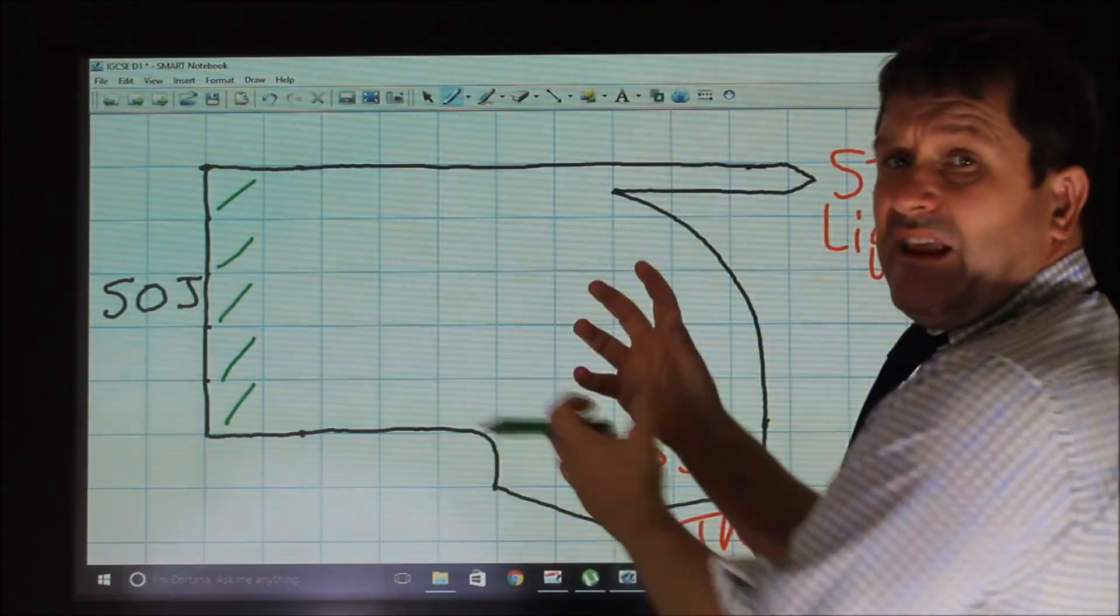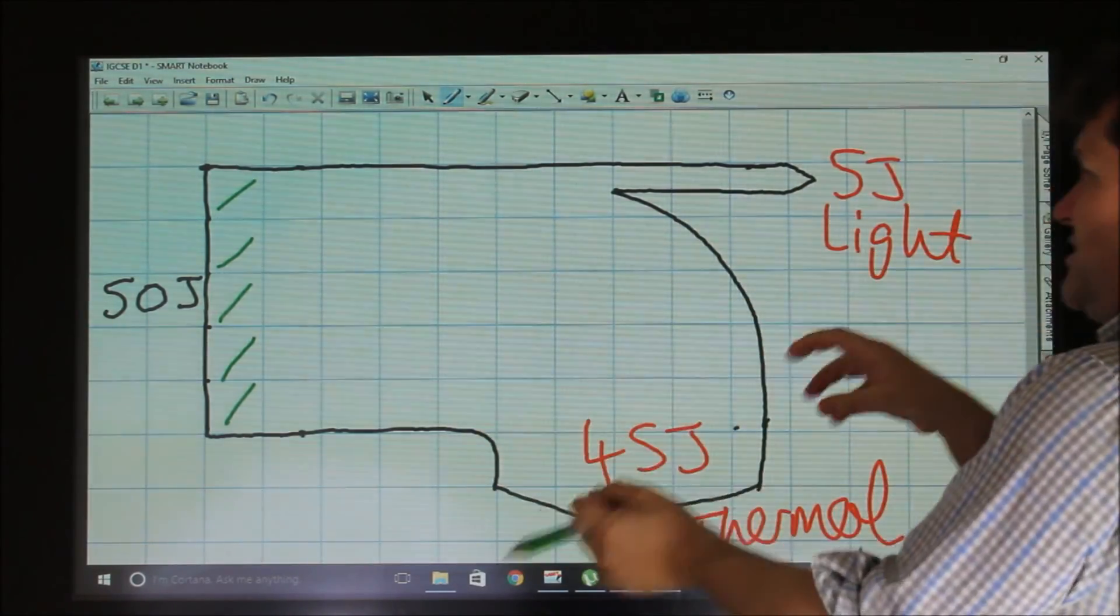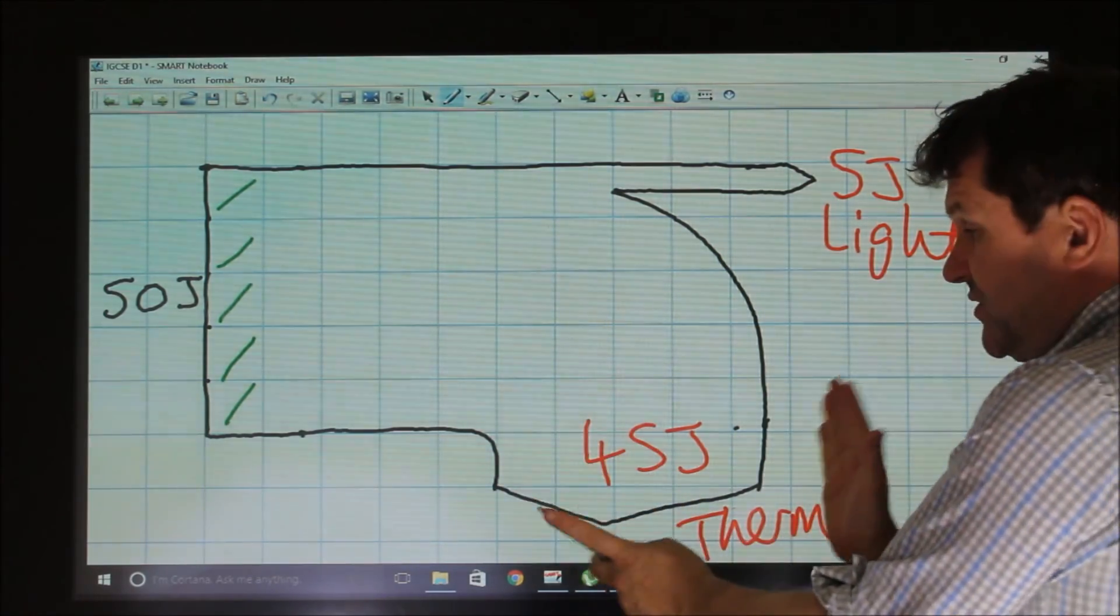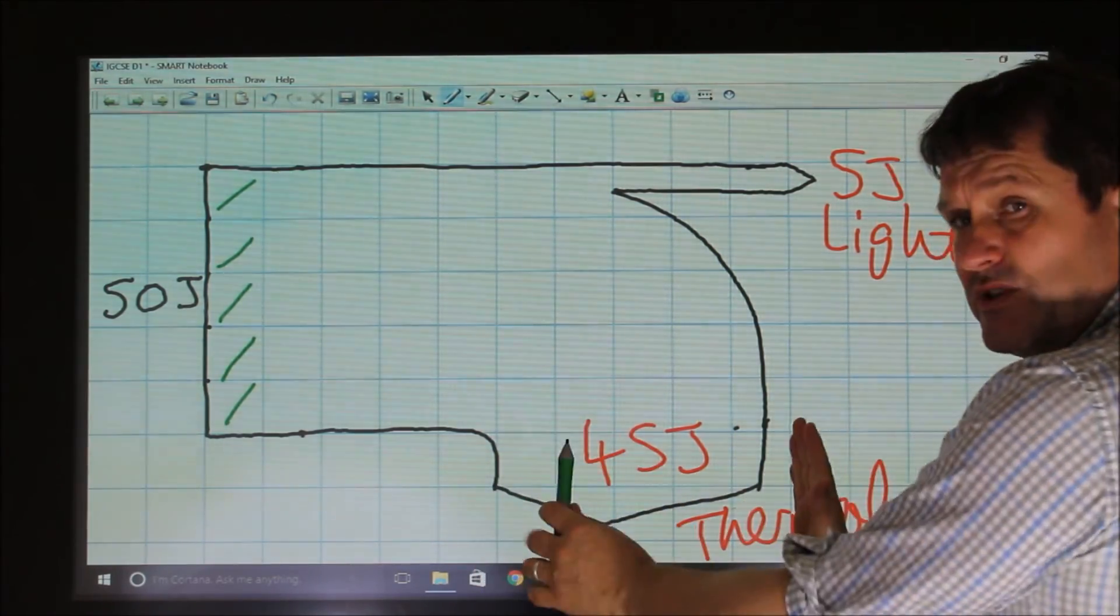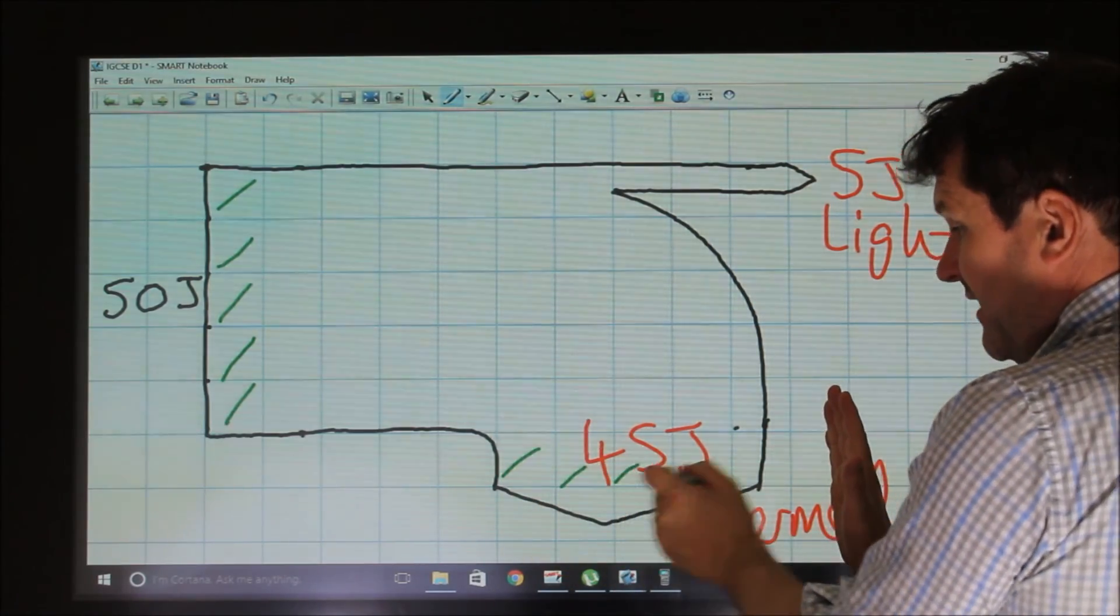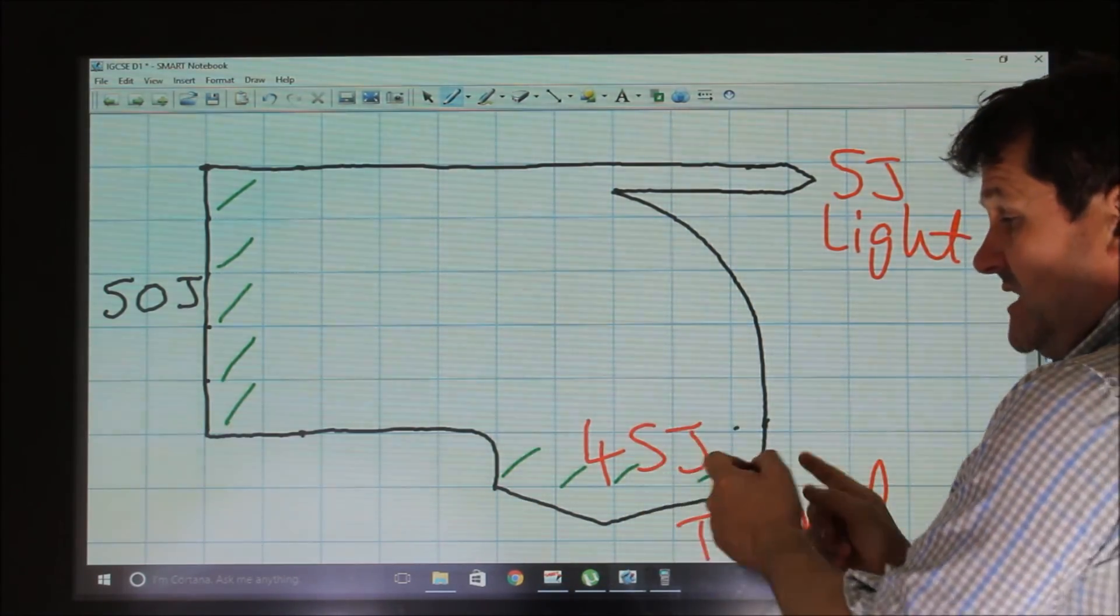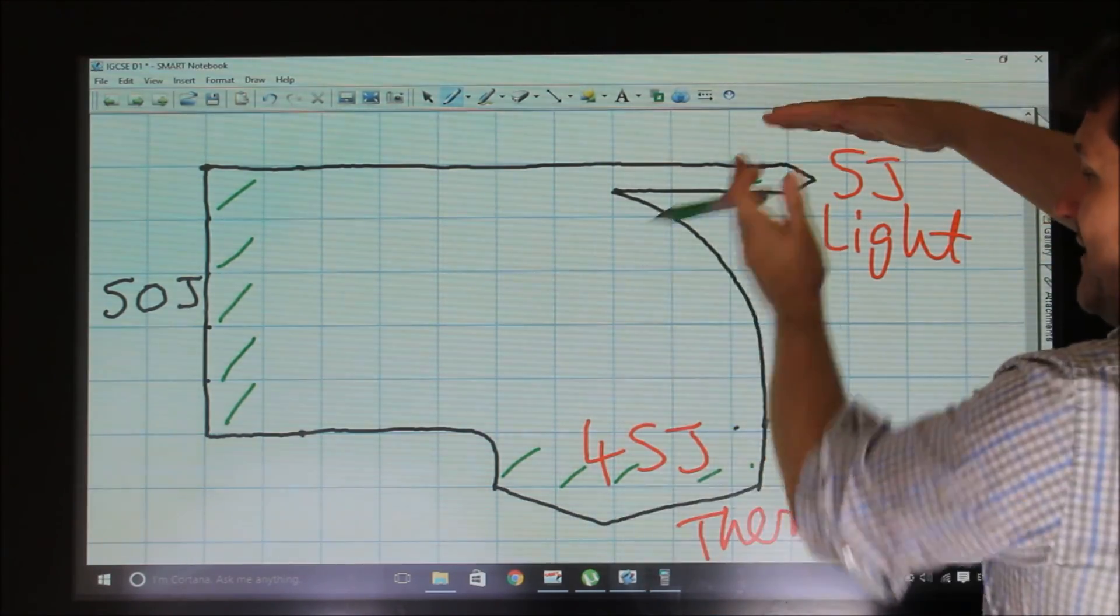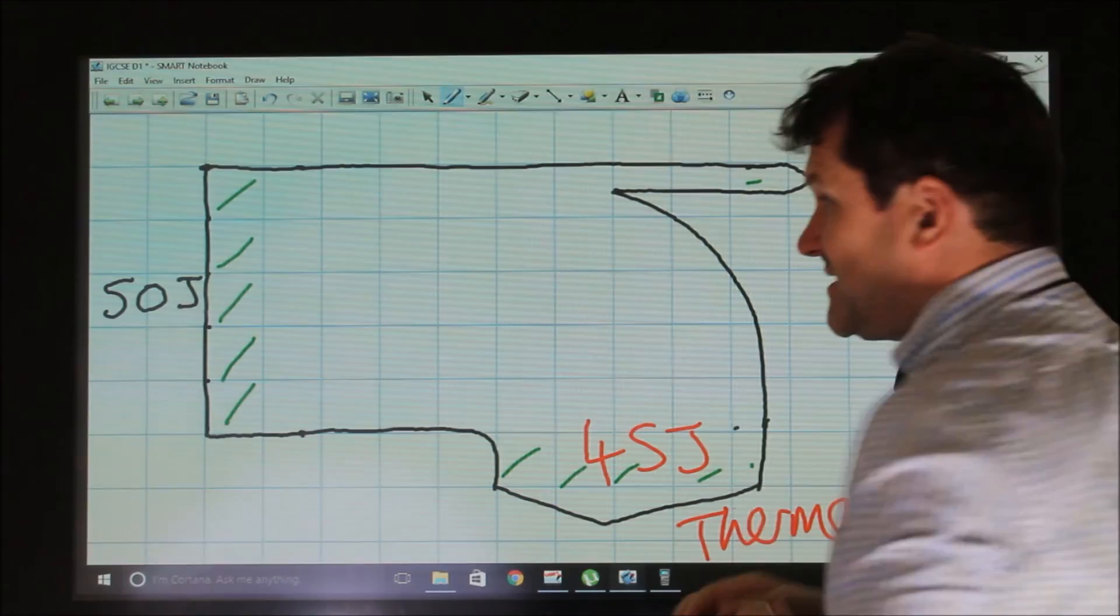And to demonstrate, to illustrate the efficiency, to illustrate how much energy is going into light and into thermal energy, it's important to make sure that the width of this is proportional. So I've got 1, 2, 3, 4 and a half squares for 45, and I've got half a square there for 5. But again,